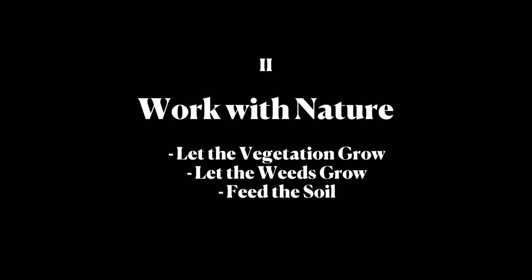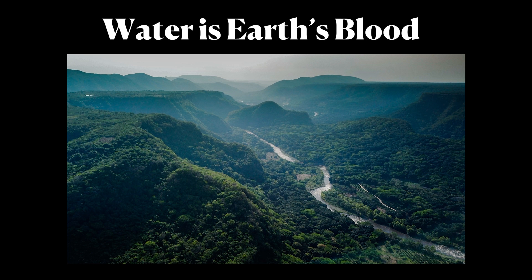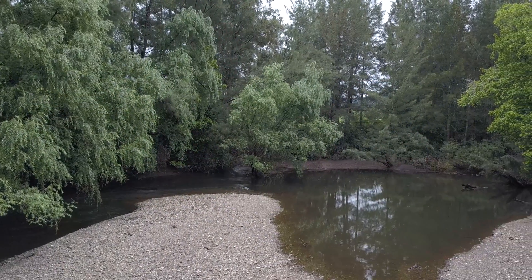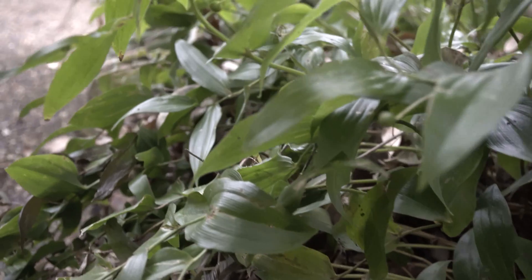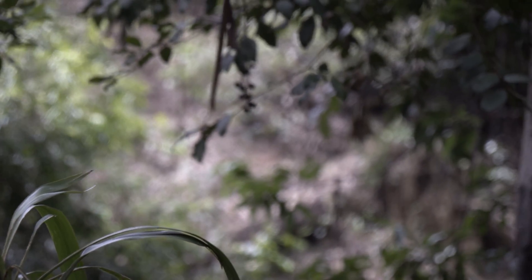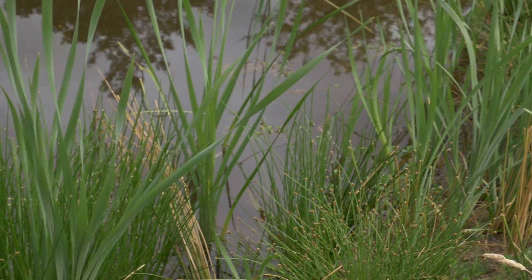The second way is to work with nature — to let the vegetation grow. The vegetation has such positive impacts. Let the weeds grow, understand what they're providing, and feed the soil. If we think of water as earth's blood, the vegetation is what provides shelter for the earth's body so that blood can enter and hydrate it. By working with diverse vegetation in a polyculture instead of a monoculture, with different species accumulating and using different nutrients and growing to different root depths, we can build the fertility and infiltration rates of the soil.